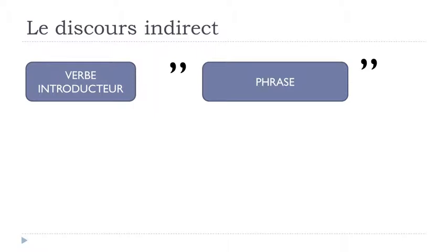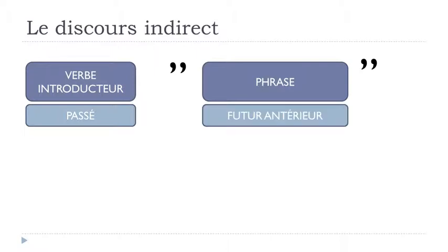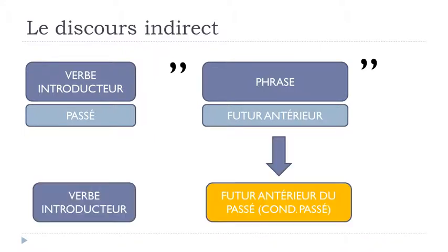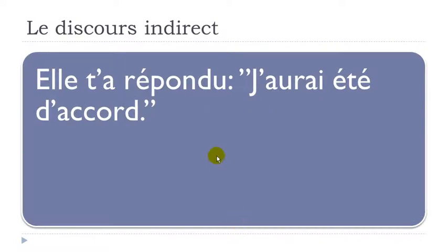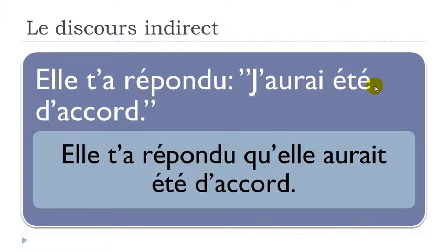If the second part contains the futur antérieur, it will become what we call futur antérieur du passé, which is technically the conditionnel passé. So: 'Elle t'a répondu, j'aurais été d'accord' — with the futur antérieur — becomes 'elle t'a répondu qu'elle aurait été d'accord.' It looks similar but it is the conditionnel passé.